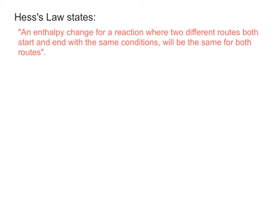So what Hess said is that an enthalpy change for a reaction where you've got two different possible routes would both start and end with the same conditions, would be the same for both routes.